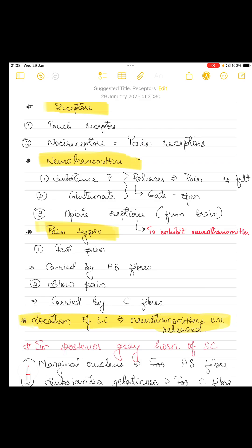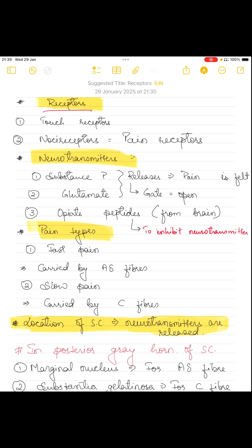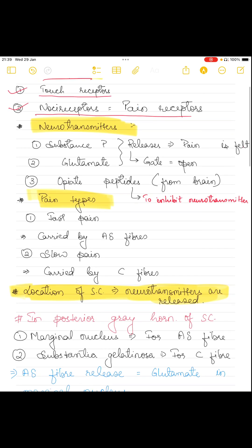Before understanding the gate control mechanism, you need to understand a few things first which are related to gate control theory. The first thing is receptors. There are two receptors involved in gate control theory: the touch receptor and the nociceptor, which is also known as the pain receptor.